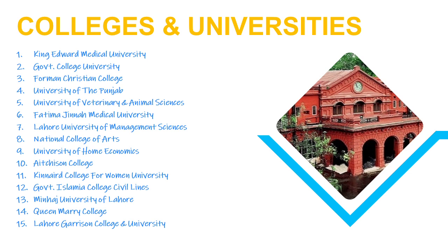Next is Government College University, also called GC University, established in 1864. Next is Forman Christian College, established in 1864. Next is University of the Punjab. Next is University of Veterinary and Animal Sciences, established in 1882. Next is Fatima Jinnah Medical University, established in 1948. Next is Lahore University of Management Sciences, also called LUMS, established in 1984.